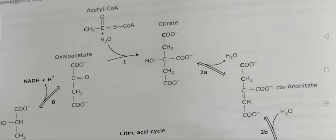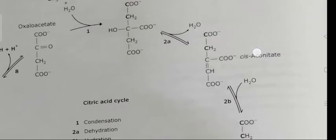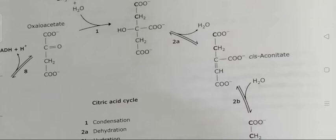Steps 2a and 2b involve an isomerization reaction in which water is first removed (dehydration) and then added back (hydration), moving the hydroxyl group from one carbon atom to its neighbor. The enzyme catalyzing this step is aconitase, a non-heme iron protein. Aconitase is the target site for the toxic compound fluoroacetate. The product of this reaction is isocitric acid.